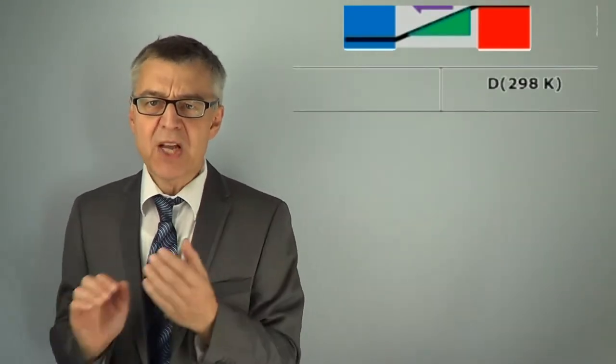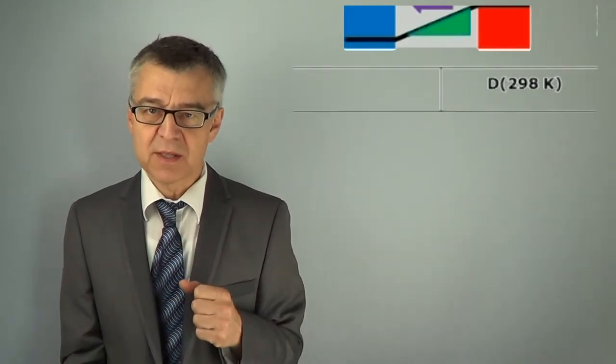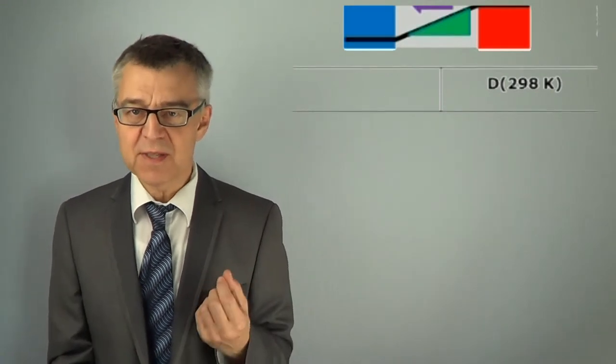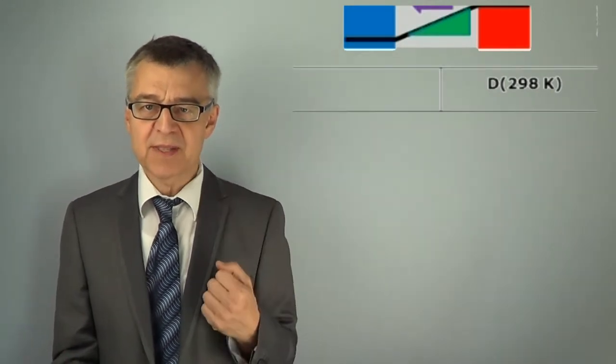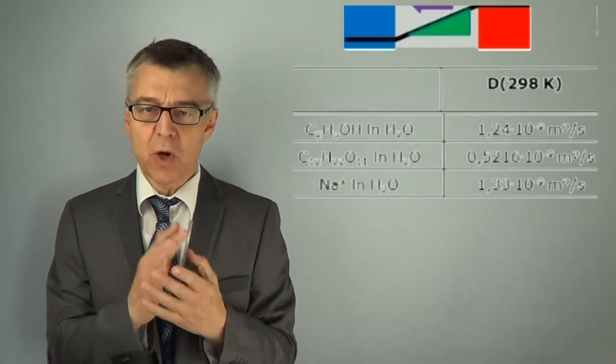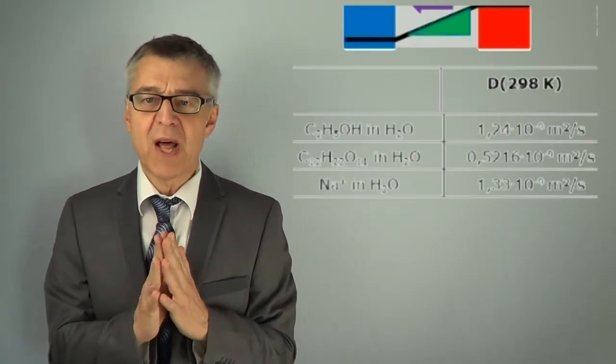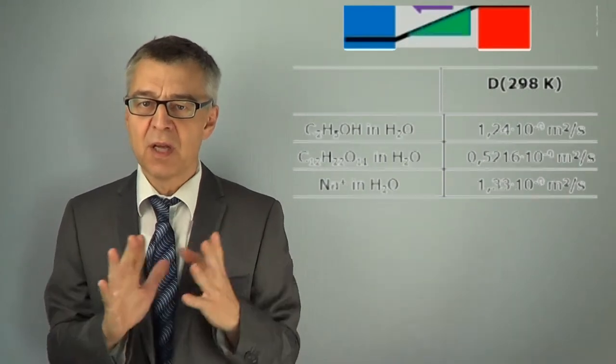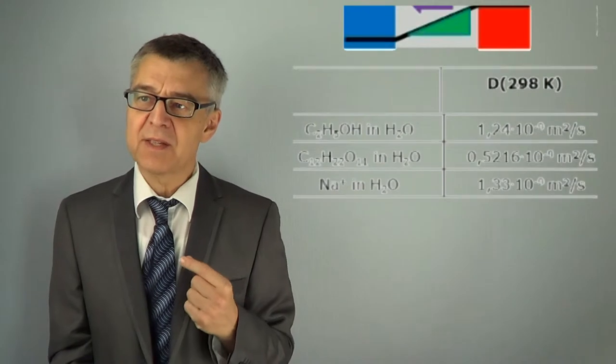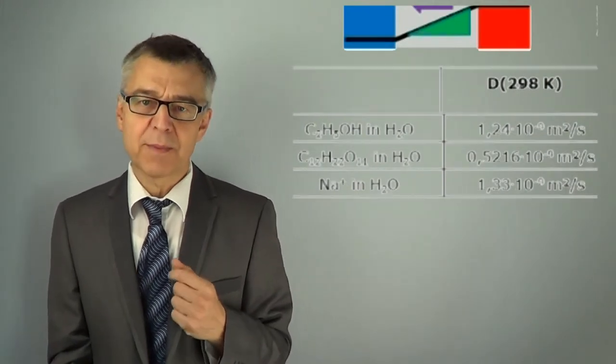Let's have a look at the diffusion coefficient D. D is a measure of how fast diffusion proceeds at a given gradient. D is dependent both on the species that diffuses and on the matrix in which it diffuses. In liquid phase and water, for example, diffusion is relatively slow. The order of magnitude of D is about 10 to the negative 9th meter squared per second.